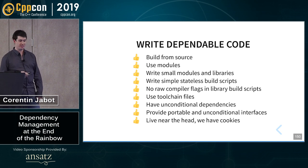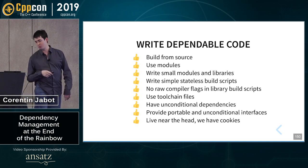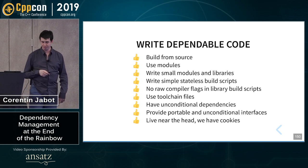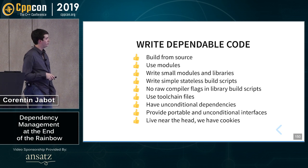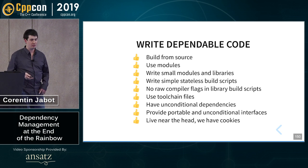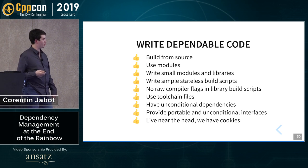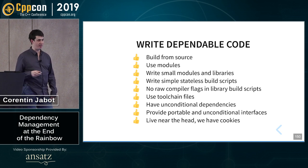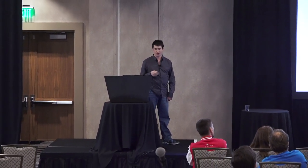I'm really sorry — I went way too fast. So here's my advice: build your code from source. Use modules as soon as possible. Write small modules, write small libraries. If you write a boost module, I have to build everything from Boost — so don't do that. Write simple, stateless build scripts. Use toolchain files. And make your code more dependable. If you have questions or need me to clarify something, please ask.